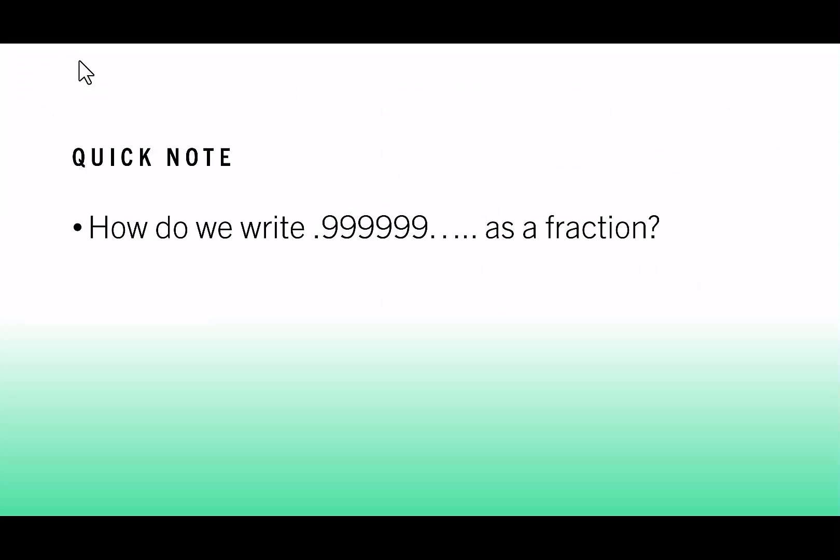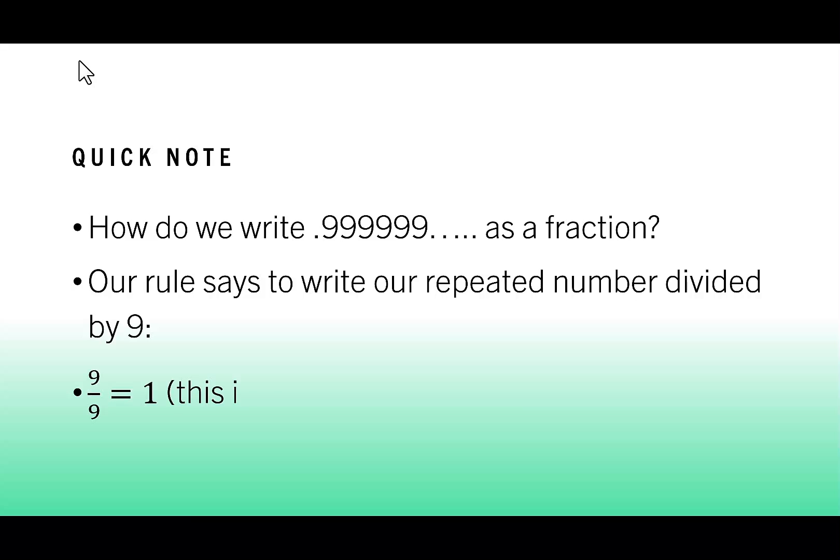To finish off the video, I wanted to give you one quick note. There is a problem with writing 0.999 as a repeated decimal as a fraction. Here's the issue. The rule says to write our repeated decimal, we're supposed to take our number and divide by 9. Well, that would mean I have 9 over 9, which is 1. This is the accepted conversion. So don't worry yourself with what do you do if you have a repeated 9. You just round up.